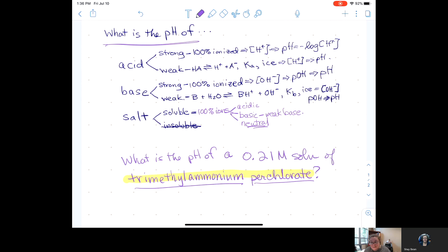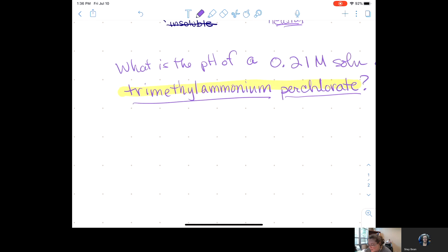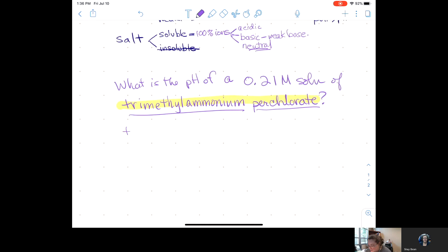If I look on my KB table, there is not this compound. There is no trimethylammonium perchlorate on my KB table. There is no trimethylammonium perchlorate on my KA table. It's a salt. And as such, that means there are two ions. It's made up of two ions. It is made of the trimethylammonium ion. And it is made up of the perchlorate ion.